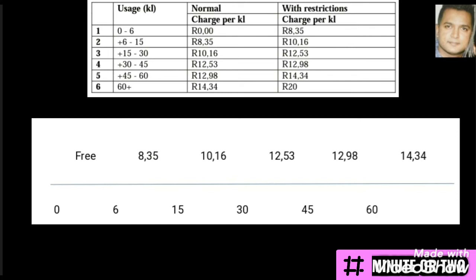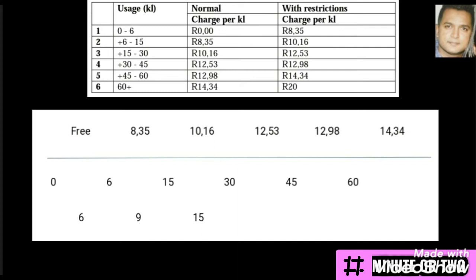At the bottom of the number line I'm indicating how many kilolitres of water I'll be using for each interval. From 0 to 6, I'll use 6 kilolitres. From 6 to 15, I'll use 9 kilolitres — calculated as 15 minus 6. The third interval from 15 to 30 gives 15 kilolitres. In my calculations, 6 times 0 gives the first amount, then 9 times R8.35, and then 15 times R10.16, adding each until I arrive at the amount of R200.